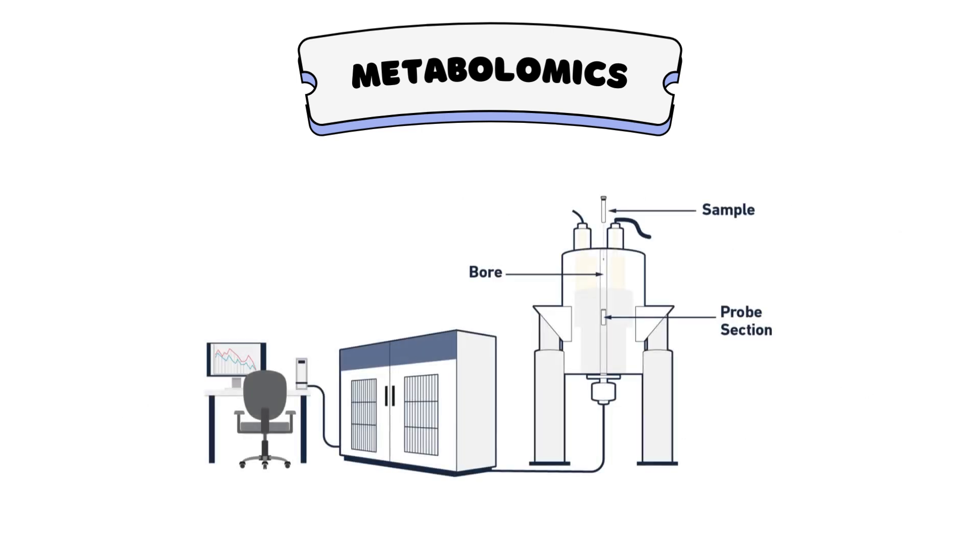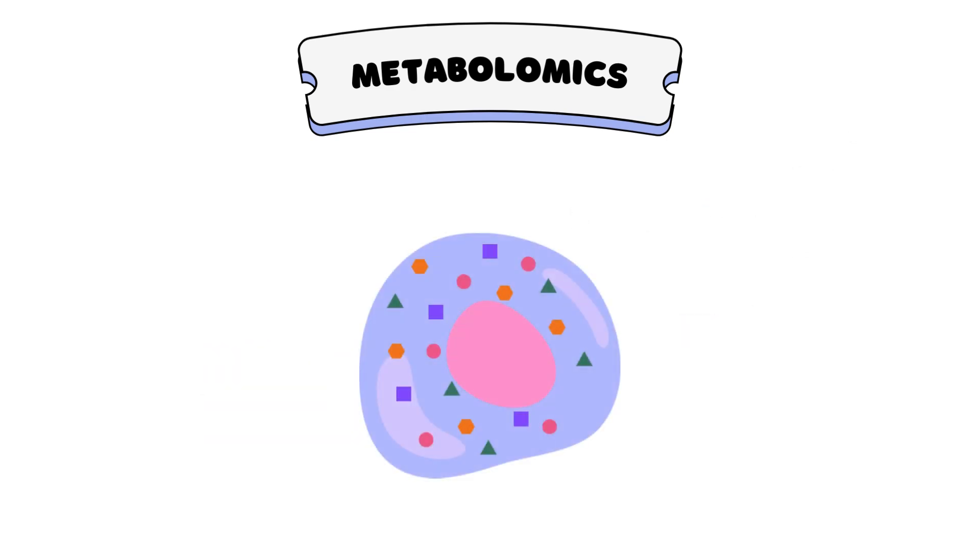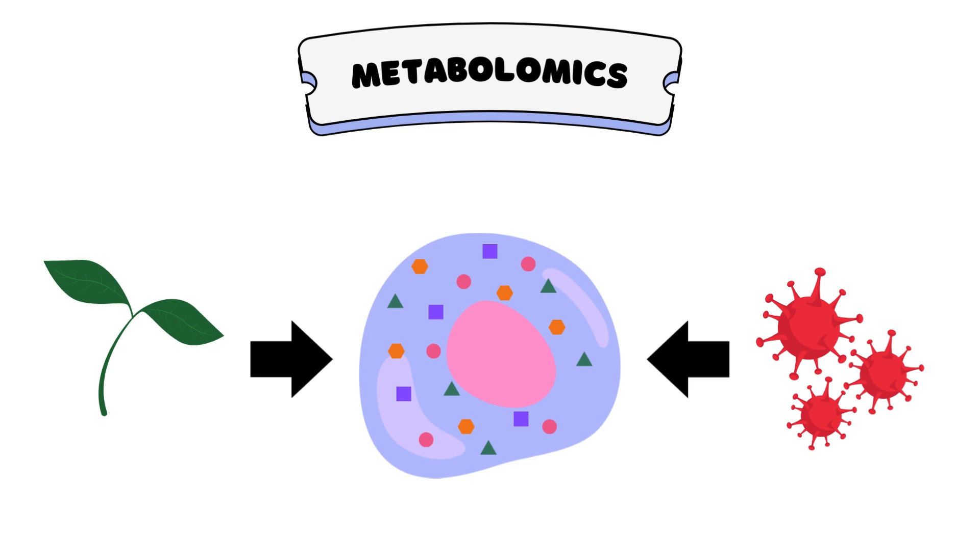including mass spectrometry and nuclear magnetic resonance spectroscopy. NMR spectroscopy uses a magnetic field and radio waves to analyze how the atomic nuclei in a molecule behave, allowing researchers to determine the molecular structures of metabolites. Regardless of the method used, metabolomics provides valuable information about how our environment and changes in our health influence the biochemical processes in our bodies.